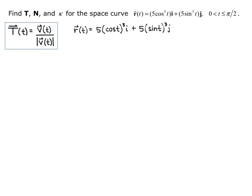So that cubed — cosine cubed of t is the same as cosine of t cubed, and same with sine. Sine cubed of t is the same as sine of t cubed. So using the chain rule now, I'm going to bring the 3 down in front. So I get 15 cosine of t squared times the derivative of the inside function. The inside function is cosine, so the derivative is negative sine of t. So that's my i component.